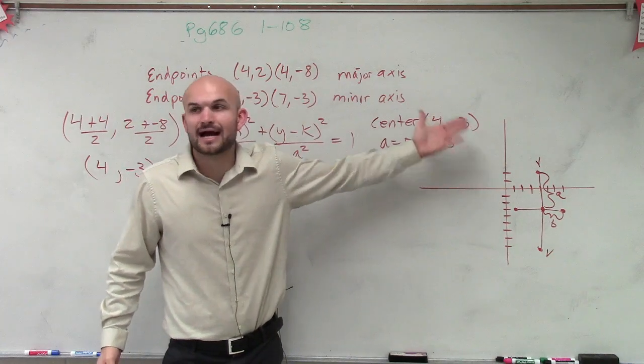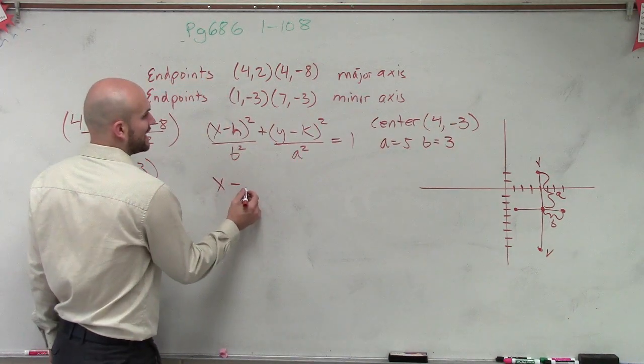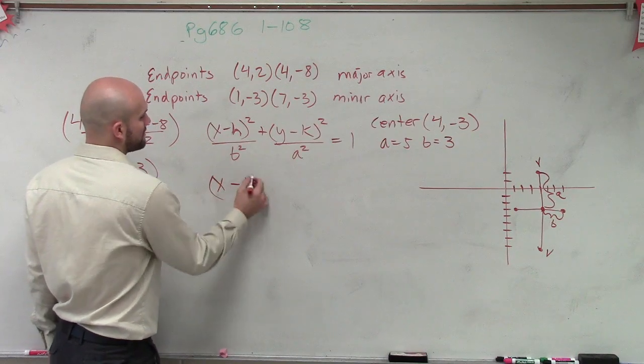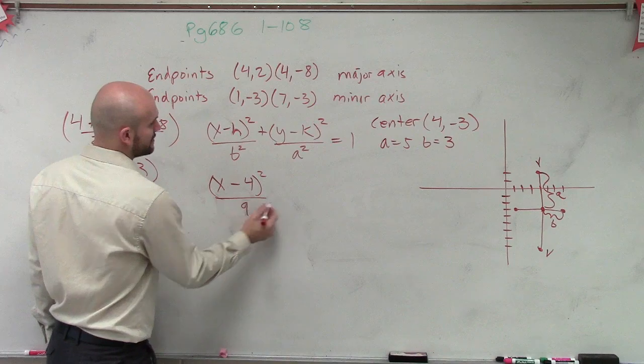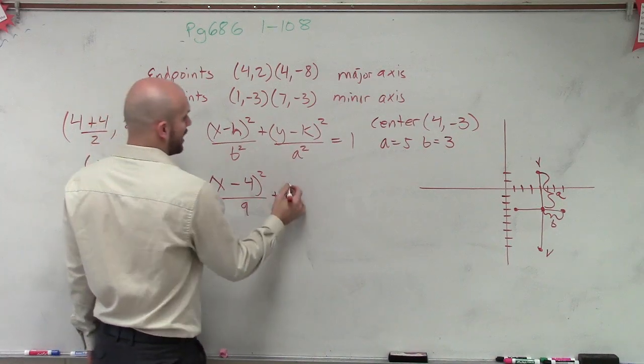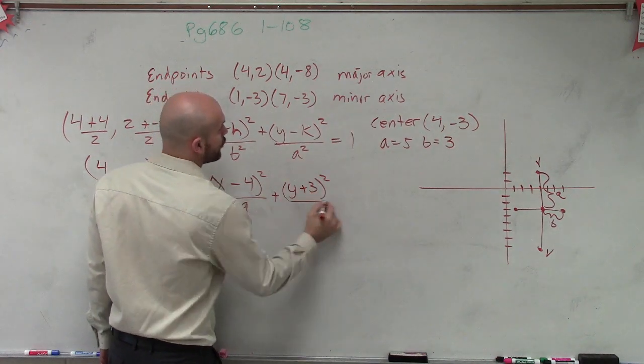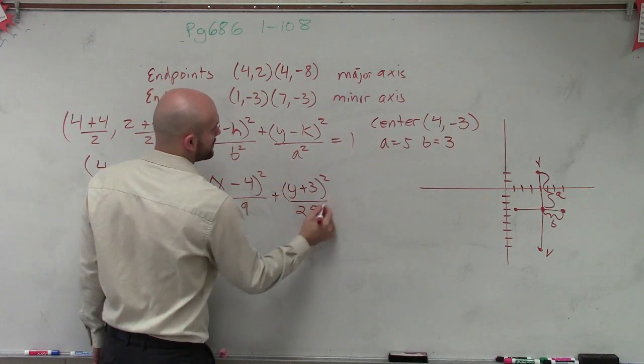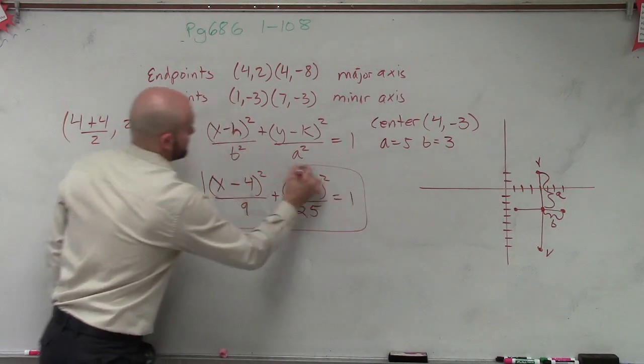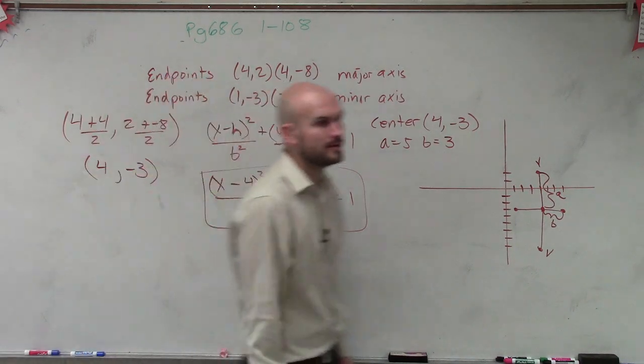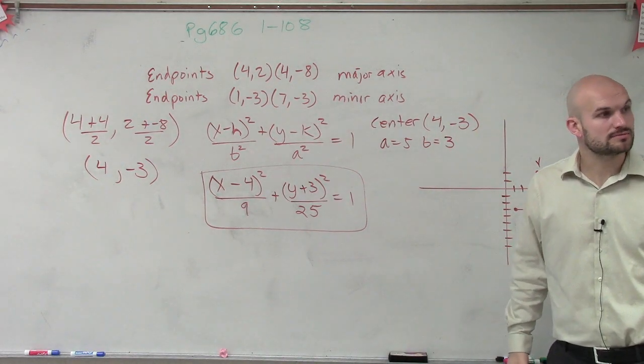Now that I know A, B, and my center, I can now write the equation, which would be (x - 4)² over b², which is 9, plus (y + 3)² over a², which is 25, equals 1. And there you go, that's your equation. Any other questions?